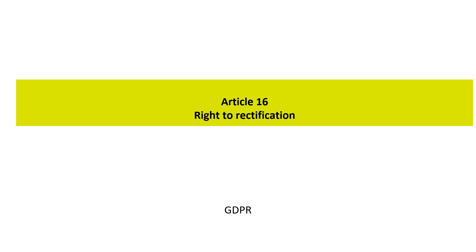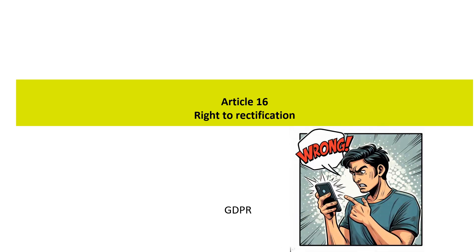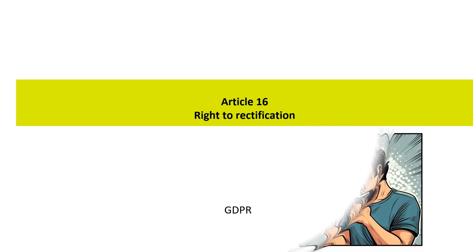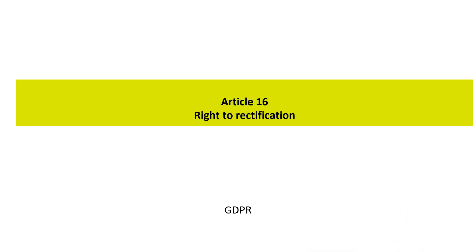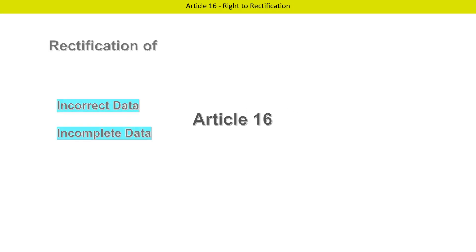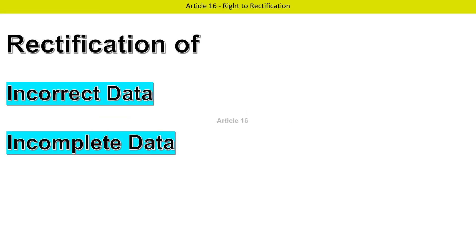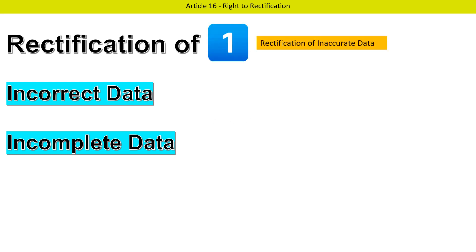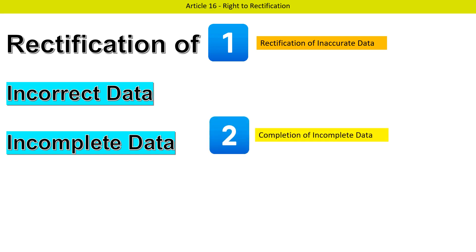Article 16 prescribes that the data subject has the right to correct any inaccurate or incomplete personal data that an organization has about them. Article 16 provides two rights to the data subject: first, Rectification of Inaccurate Data, and second, Completion of Incomplete Data.